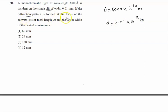If the diffraction pattern is formed at the focus of the convex lens of focal length 20 centimeter, capital D is given as 20 centimeter, so 20 x 10 raised to the power minus 2 meter.